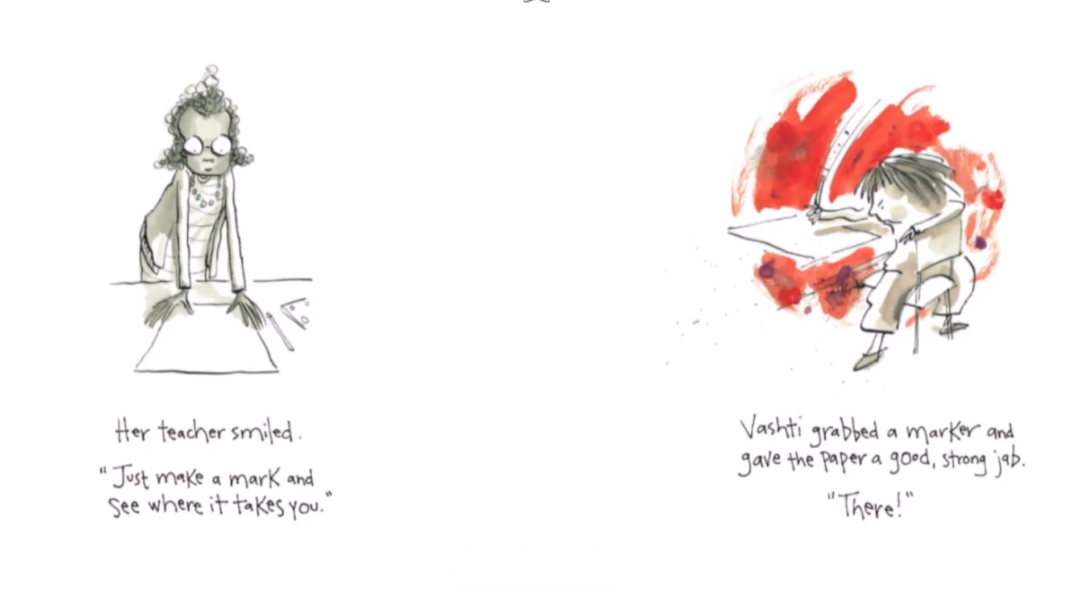Her teacher smiled. 'Just make a mark and see where it takes you.' Vashti grabbed a marker and gave the paper a good strong jab. 'There.'